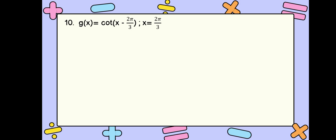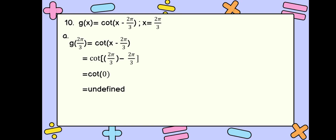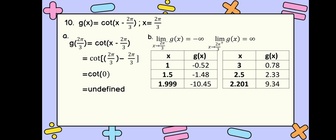Number 10: we are going to check if our function cotangent of x minus 2 pi over 3 is continuous at x equals 2 pi over 3. Let us first evaluate our function. g of 2 pi over 3 equals cotangent of 2 pi over 3 minus 2 pi over 3. 2 pi over 3 minus 2 pi over 3 is 0, so the cotangent of 0 is undefined. Since our function does not have a value, it is discontinuous at x equals 2 pi over 3. Using one-sided limits, since both limits go to infinity, we can conclude that our discontinuity is infinite discontinuity.